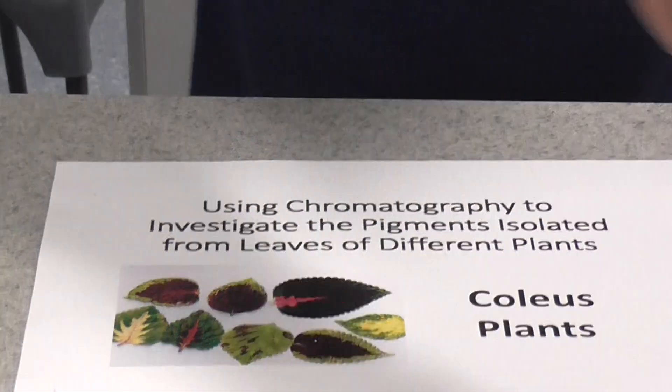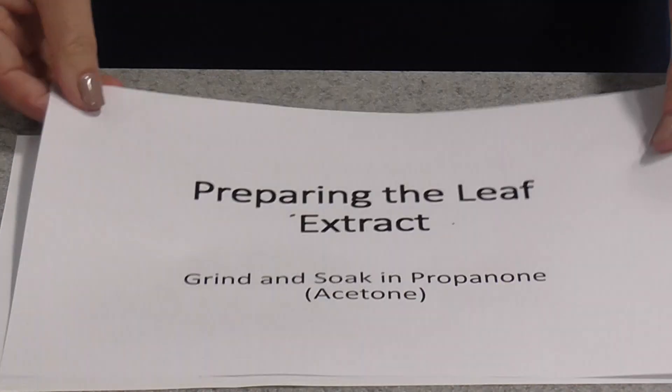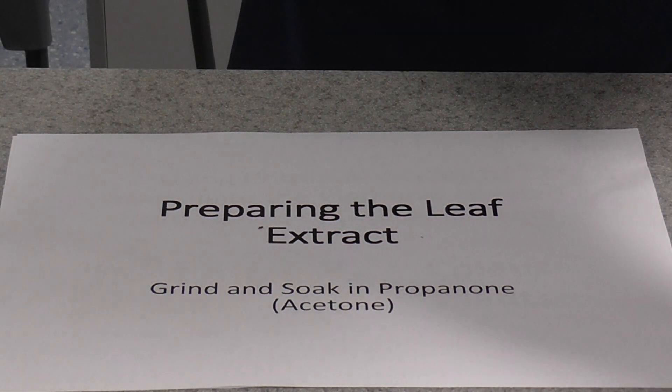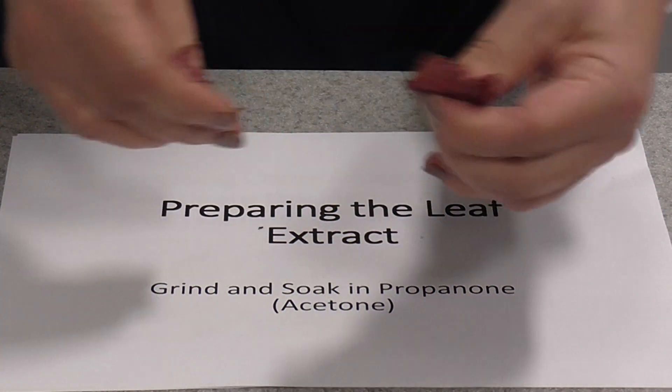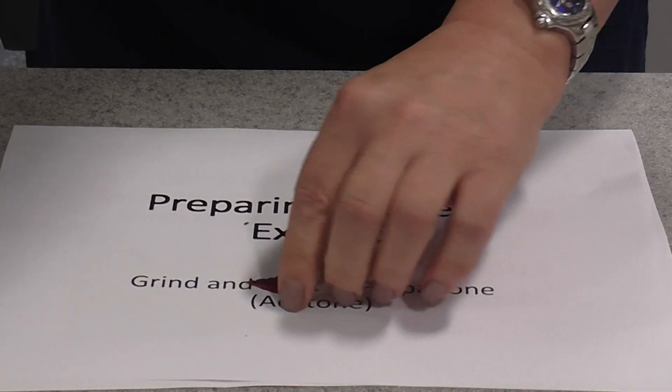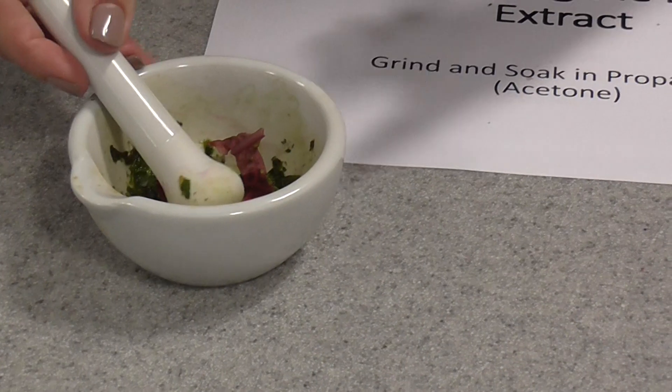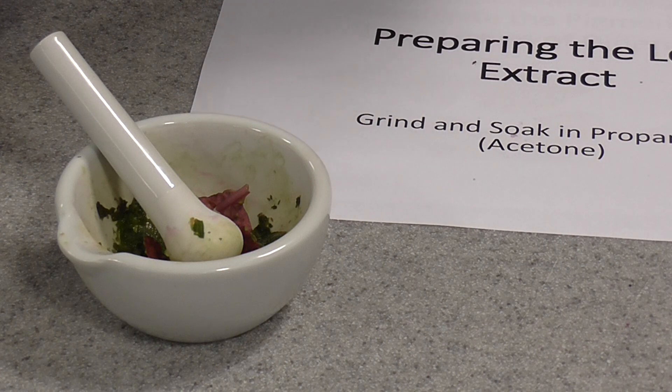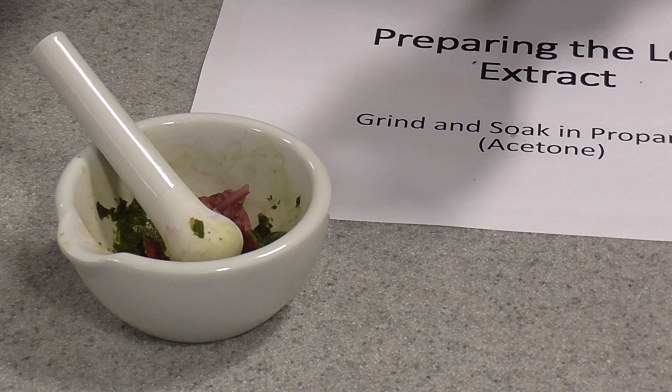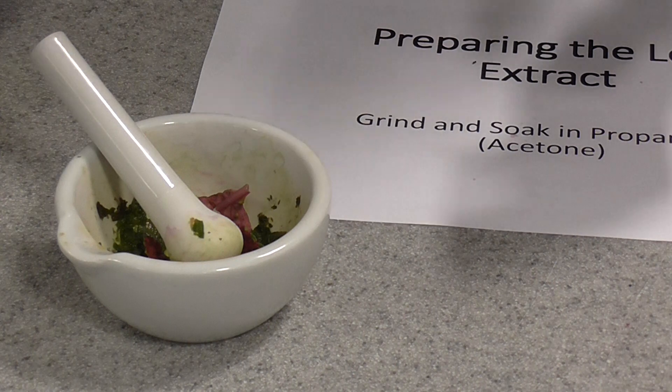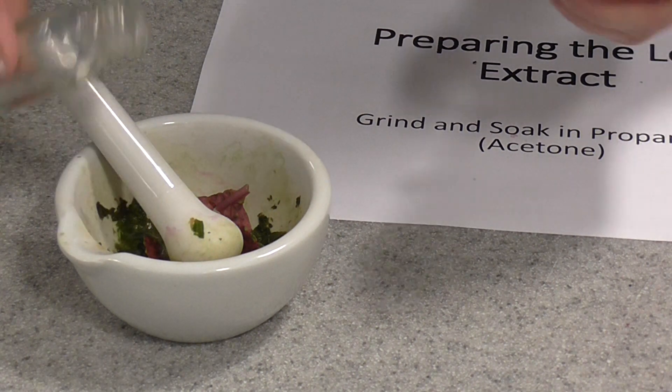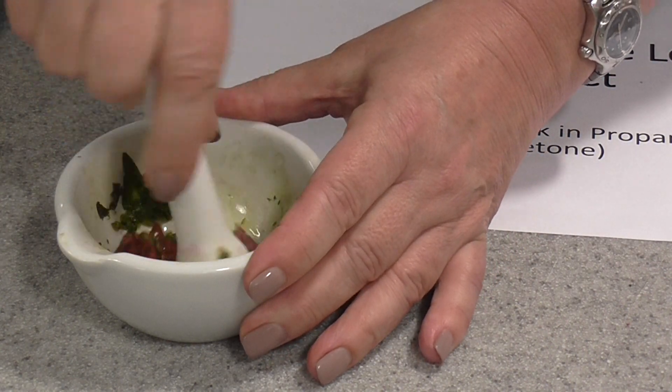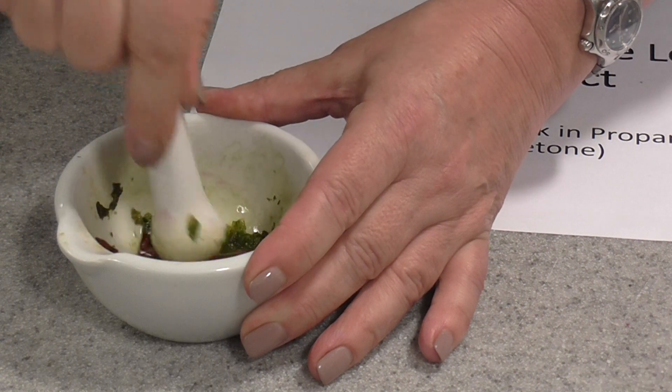The first thing you need to do is prepare a leaf extract. You're going to take a couple of little leaves off your plant, whatever you've chosen. I've got coleus leaves here. Tear them up and put them in a mortar. Now you can see I've already been doing this. It's a good idea to have just a pinch of sand. Then you need some solvent. The solvent for this is propanone, or in other words, acetone. Just a little bit. You don't want too much because you want a nice concentrated pigment extract. Grind your leaves up with the sand and the acetone.